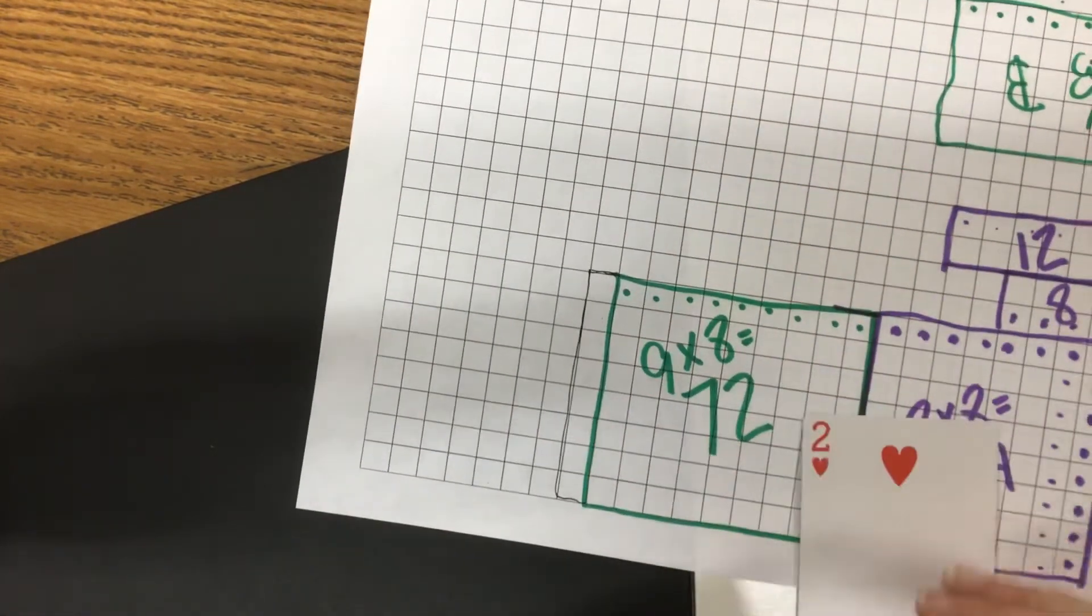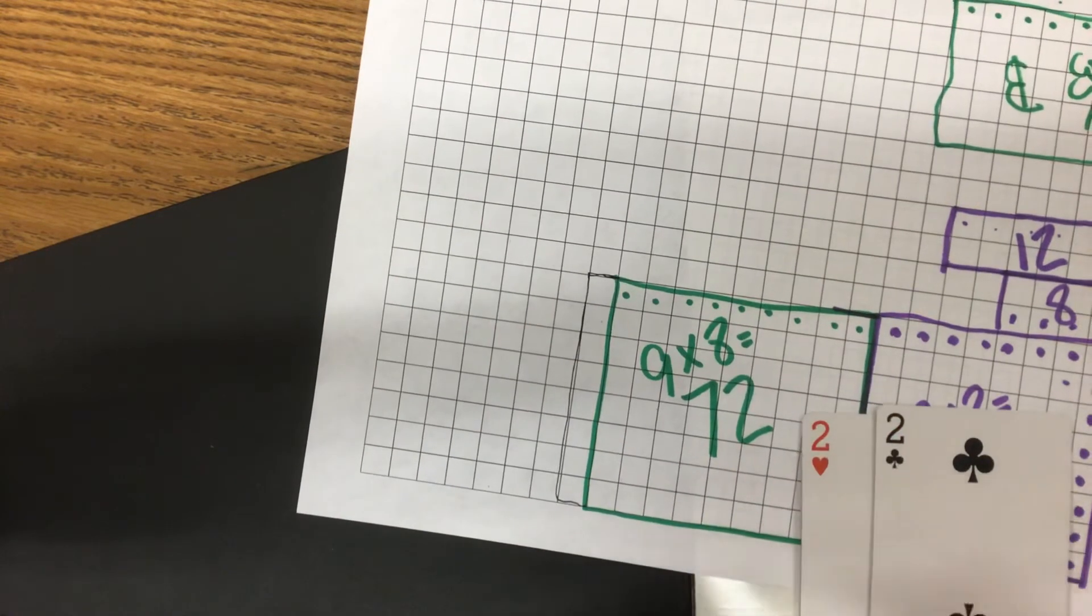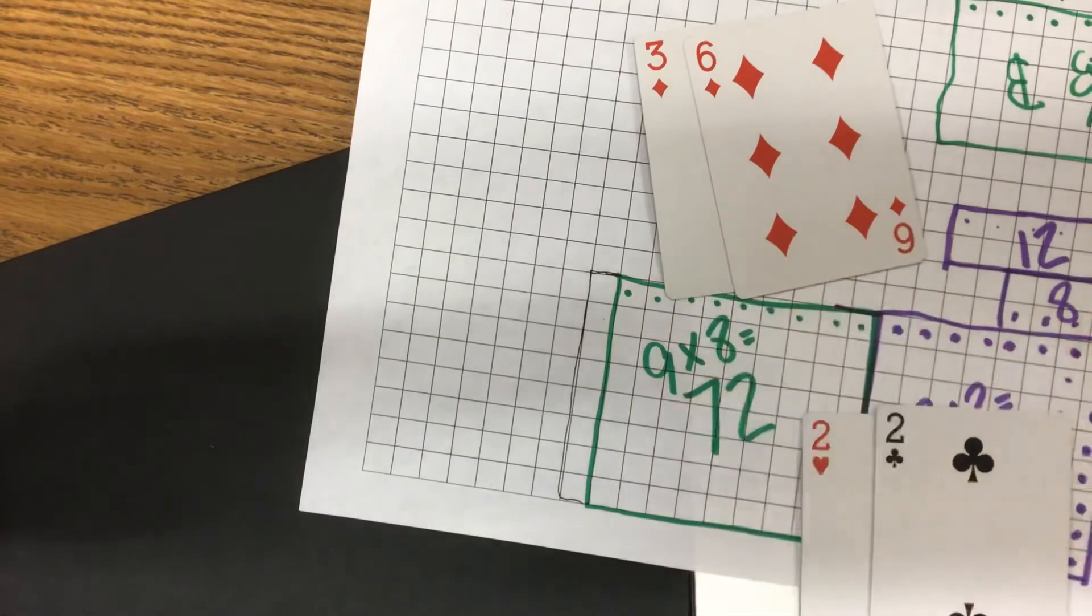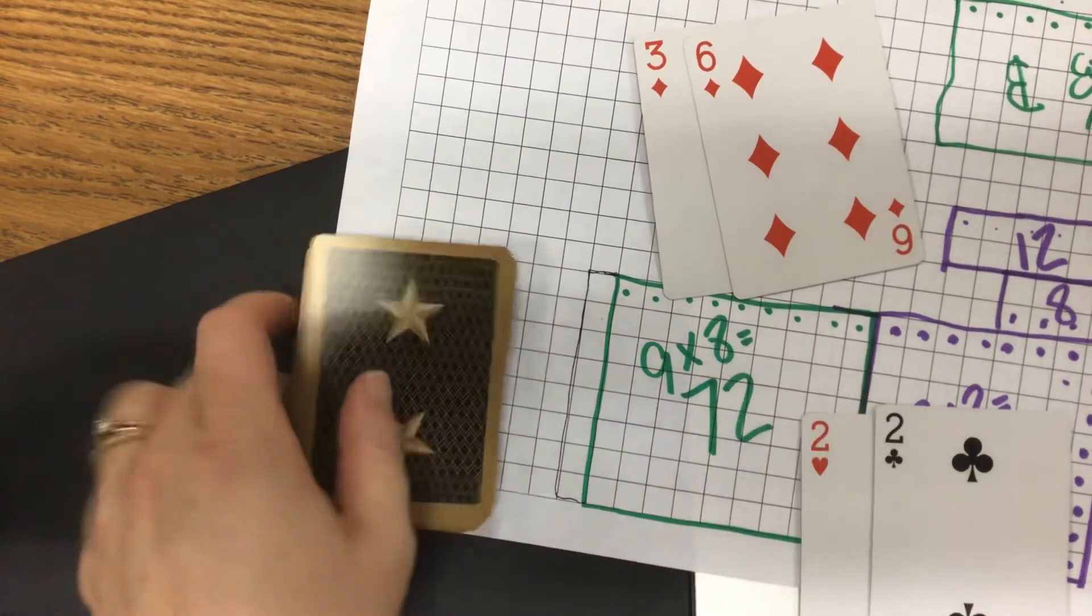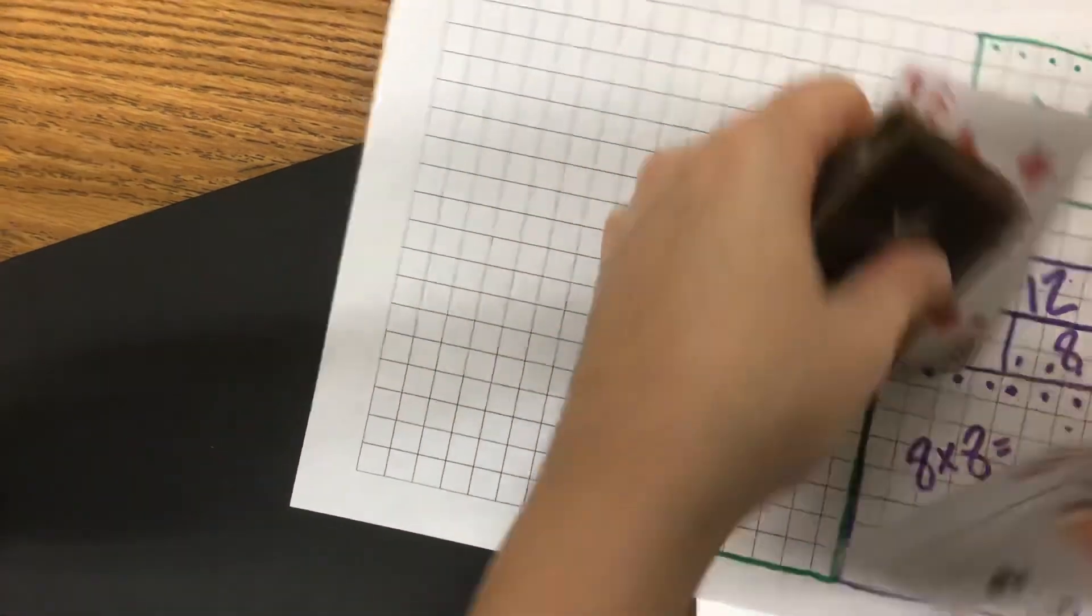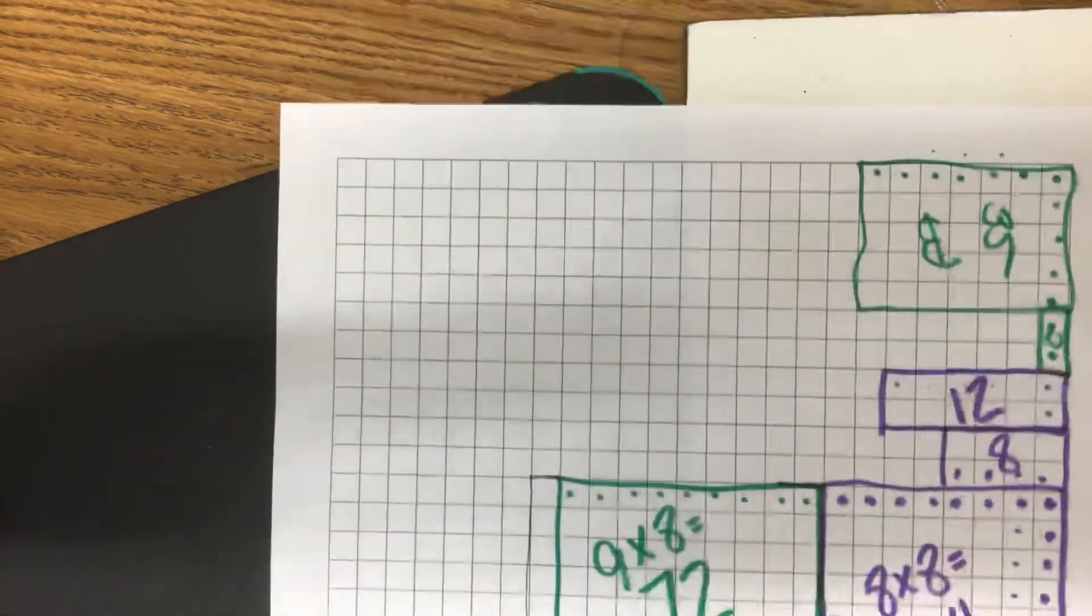But I would do two cards—I would do two times two—and Debbie would do two cards, so she would do three times six. So if you don't have dice at home, you can play this same game using a deck of cards. And the winner is the person who fills the most squares up on the graph paper.